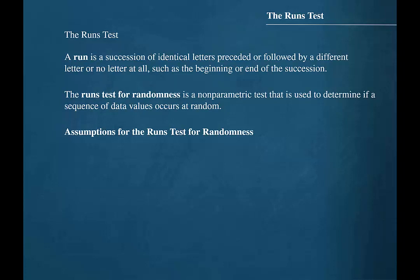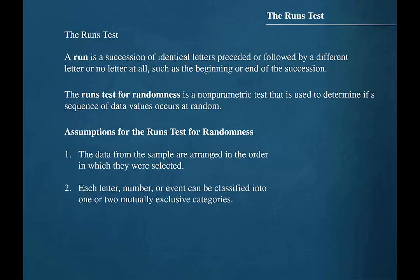Assumptions for the runs test for randomness are: 1. The data from the sample are arranged in the order in which they were selected. 2. Each letter, number, or event can be classified into one of two mutually exclusive categories.